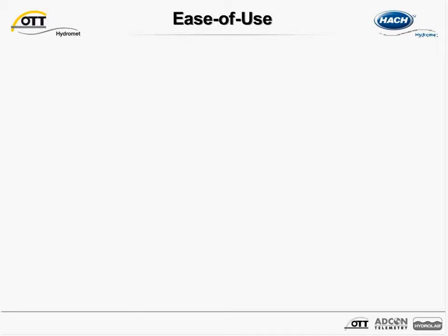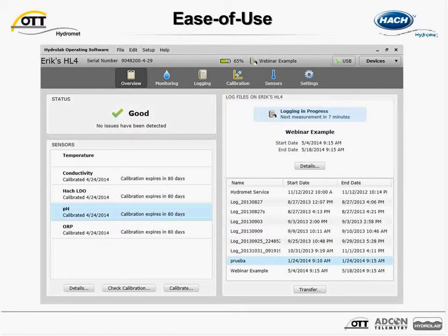"Ease of use" is a phrase used a lot and maybe too often — it has become a bit cheapened and is definitely in the eye of the beholder. To the HydroLab product development team, ease of use means problems and issues are obvious, there are clear paths to fix them, mystery is taken out of calibration and maintenance processes, and it's exceedingly difficult to do anything wrong that will lead to bad data or get lost in a menu. HydroLab ease of use comes primarily from the applications used to operate it, and I'll show a few examples.